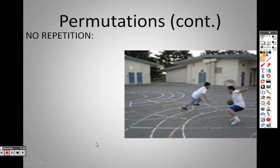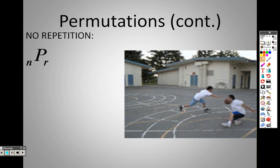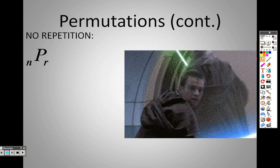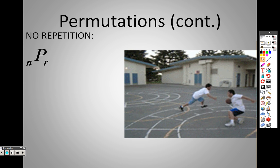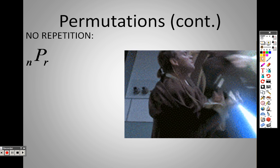When we're talking about permutations, we have two different formulas. Here's the first one, NPR. Yes, you can use a calculator for this, but I'm not going to explain the calculator. I want to make sure you understand how to do it first with factorials.